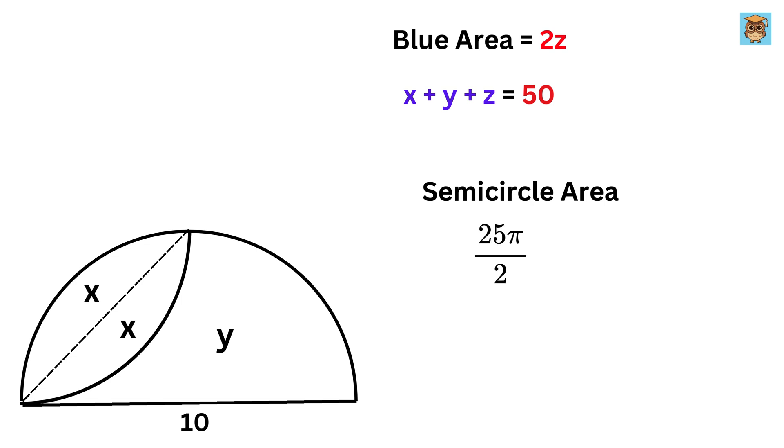When we calculate it, we get 25 times pi over 2 as the area of this semicircle, but the area of this semicircle is also equal to 2 times x plus y. So, equate both of them.